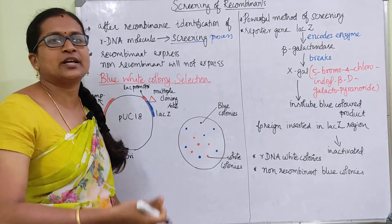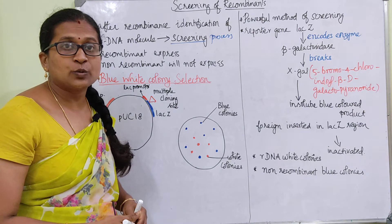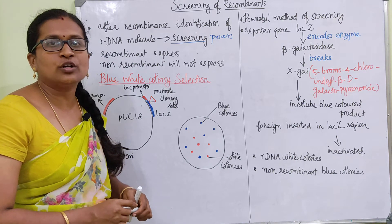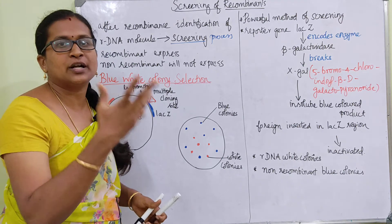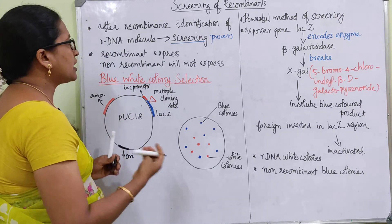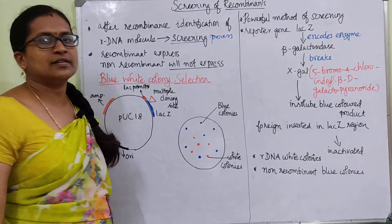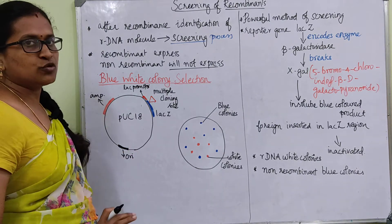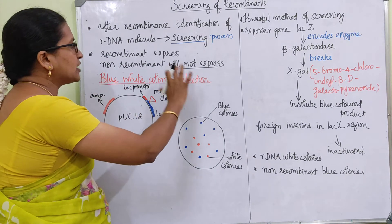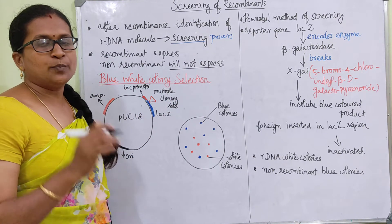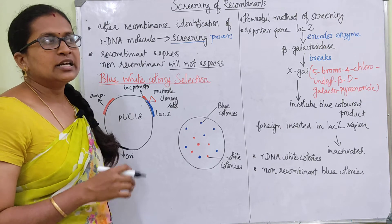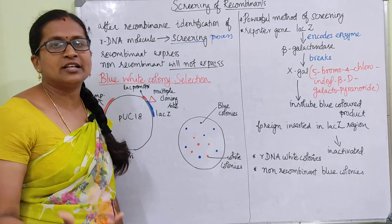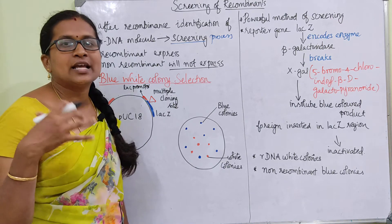Recombinants are going to express. If we insert the gene, that gene is going to get expressed as a particular protein or enzyme. Non-recombinants will not express — they will sit silently. When we see the plates, we can find whether the recombinants are there or not.